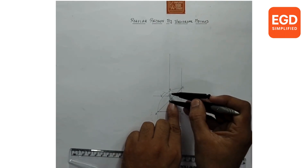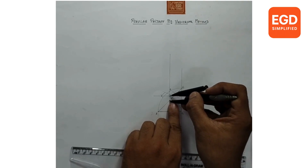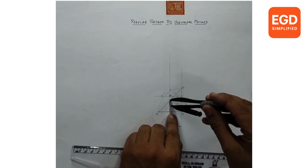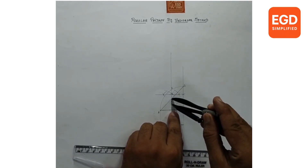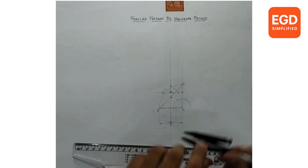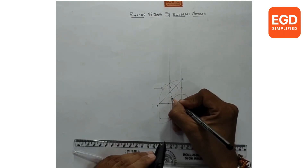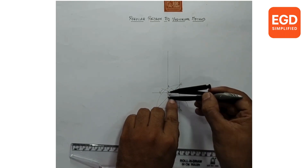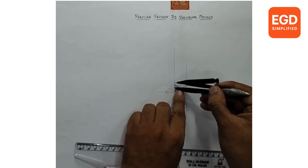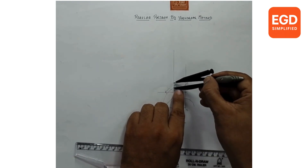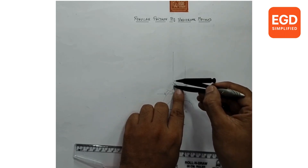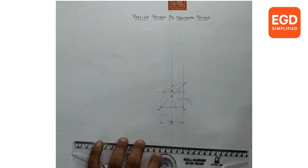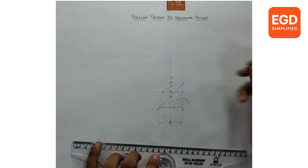Take a measurement from 4 to 5. From point 4, draw an arc on the bisector — that gives us point number 3. By keeping the same measurement from 4 to 5 (or 5 to 6), draw another arc from point 6 to get point number 7, and from 7 draw an arc to get point number 8. Give numbering 7 and 8.